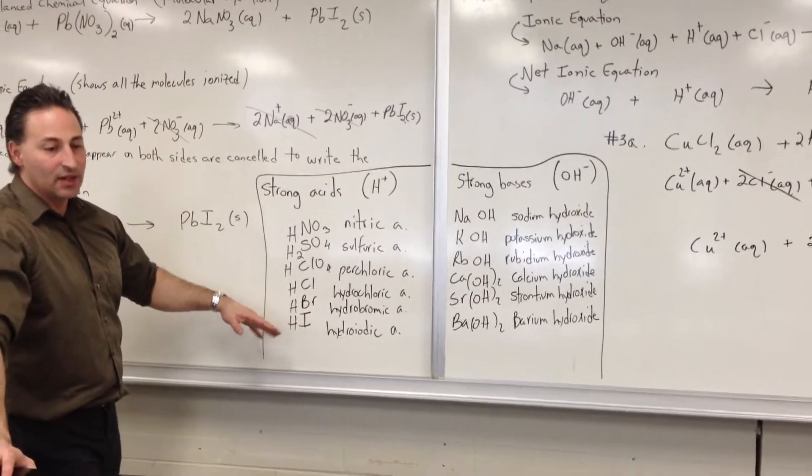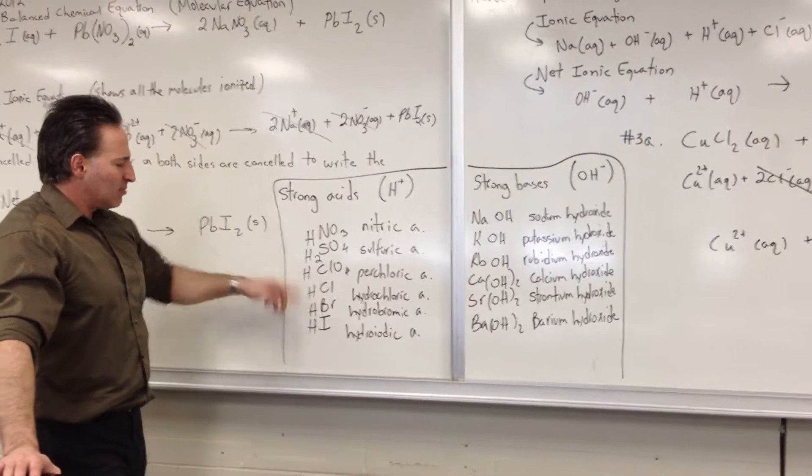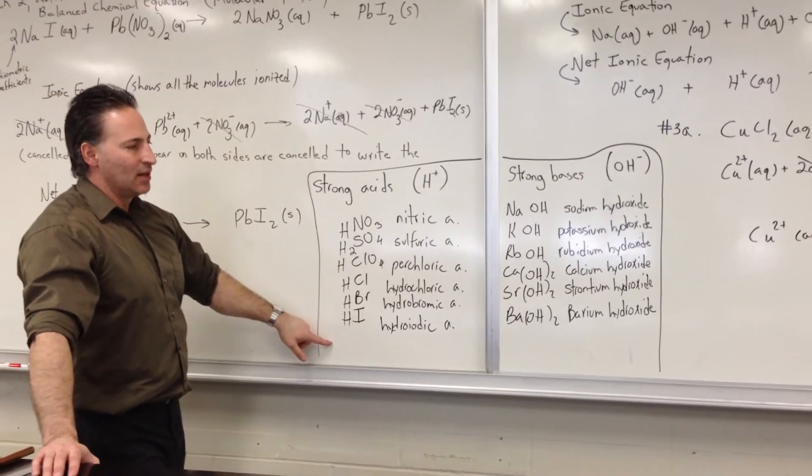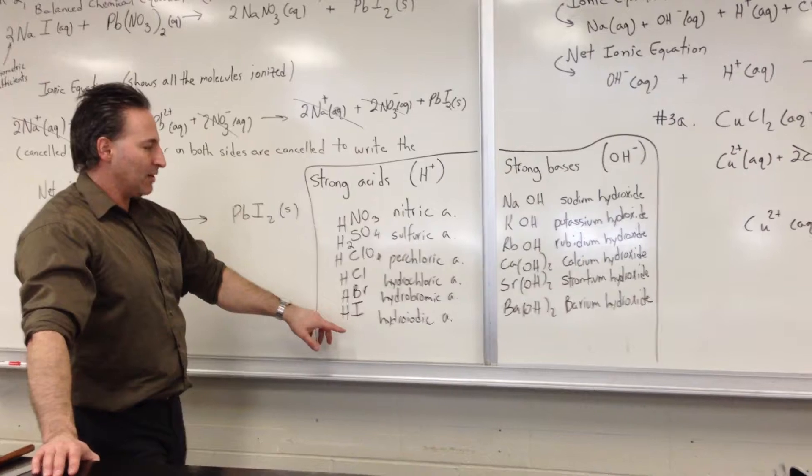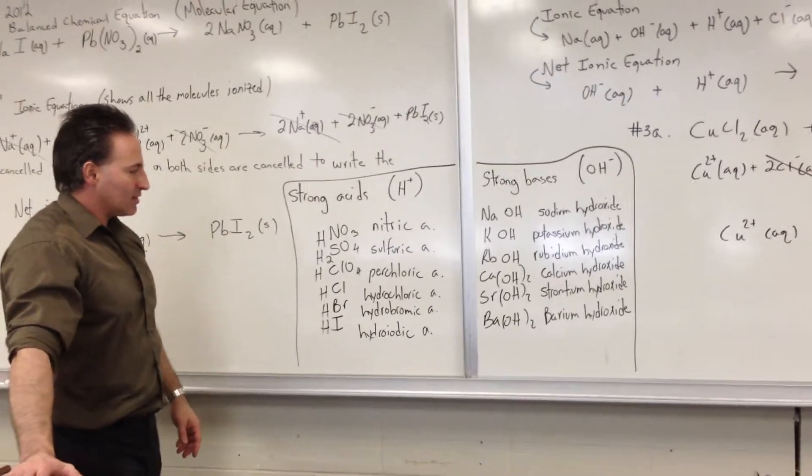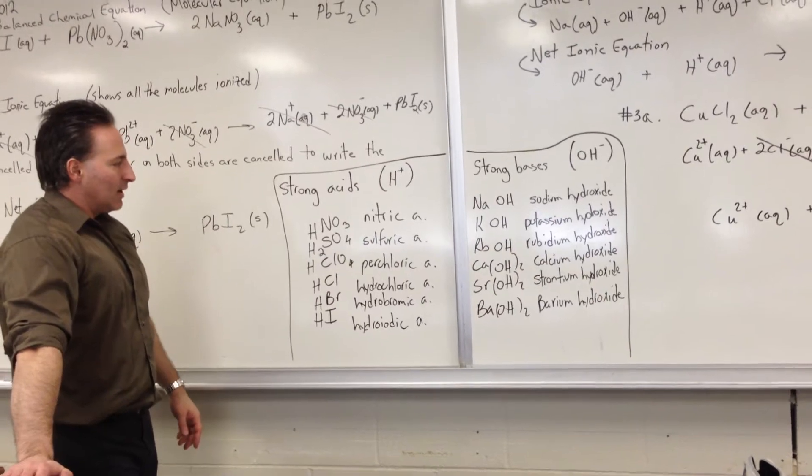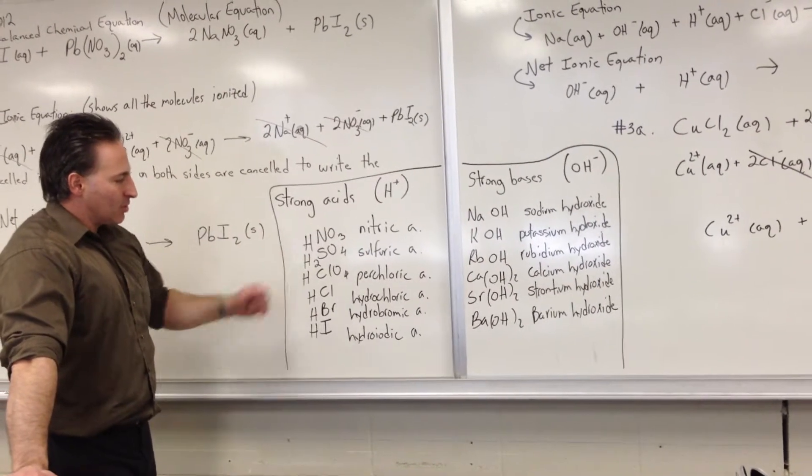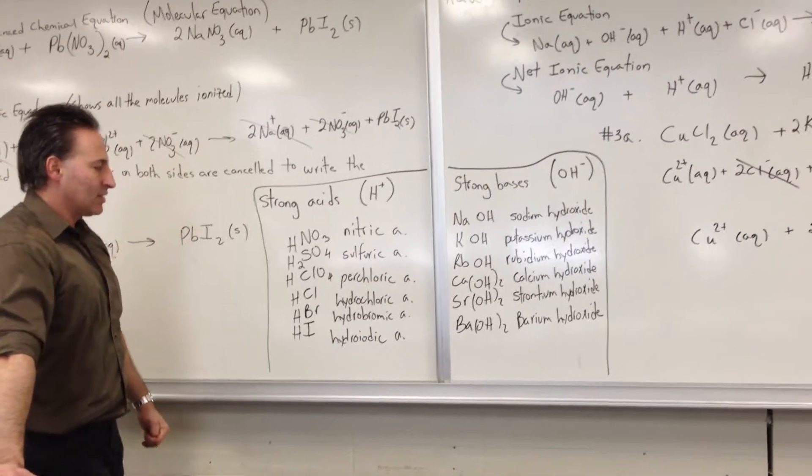If it's not a strong acid, it's a weak acid. Some people also will add to that list chloric acid, which is HClO3, that I haven't included in this list. These are the six strong acids that are most commonly used: nitric acid, sulfuric acid, perchloric acid, hydrochloric acid, hydrobromic acid, and hydroiodic acid.